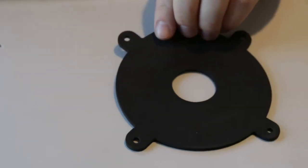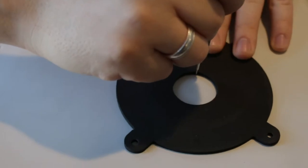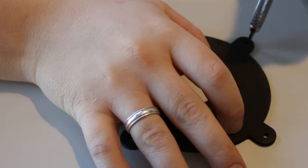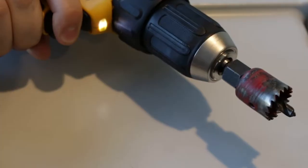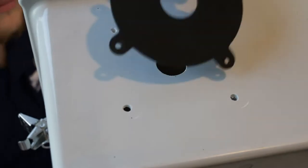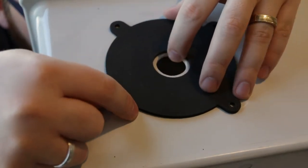Using the provided gasket and your pencil or marker, trace the five holes on the top of your panel. Using the hole saw and 3/16ths inch bit, drill out the five holes. Place the gasket back on top of the panel and line it up with the five holes you just drilled.